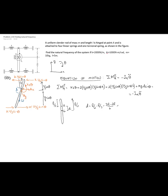To get the mass moment of inertia with respect to A, we use the parallel axis theorem: I_A = (1/12)ML² plus M times d squared, which gives (1/12)ML² plus (1/36)ML². Adding those gives (4/36)ML², which equals (1/9)ML².